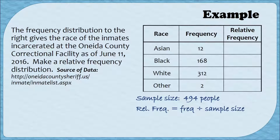To find the relative frequency, we divide each of the frequencies by the sample size. Because we're taking the frequency first and dividing by 494, all of our relative frequencies are going to be 0-point-something, since we're taking a smaller number and dividing it by a larger number. If you end up with a value bigger than 1, most likely you've divided in the wrong order. For example, to find the relative frequency for Asians, I do 12 divided by 494, and rounding to the nearest thousandth, that gives me 0.024.